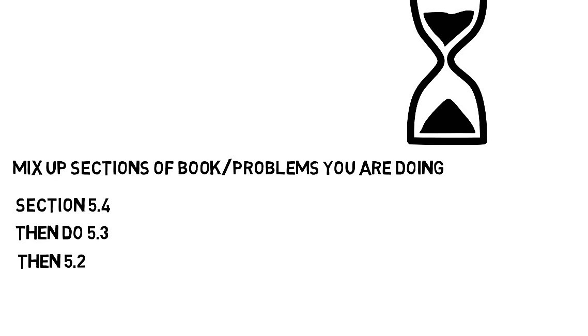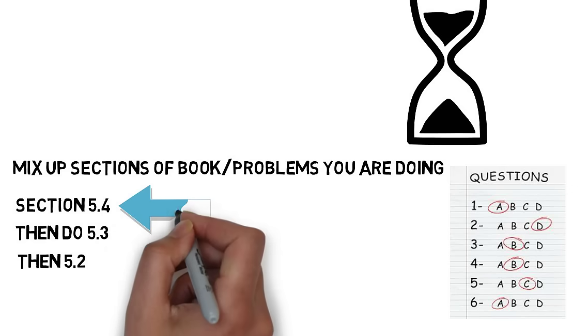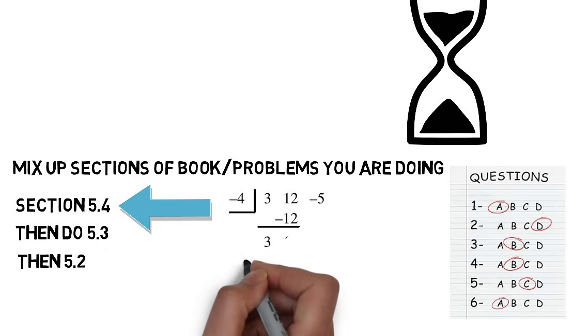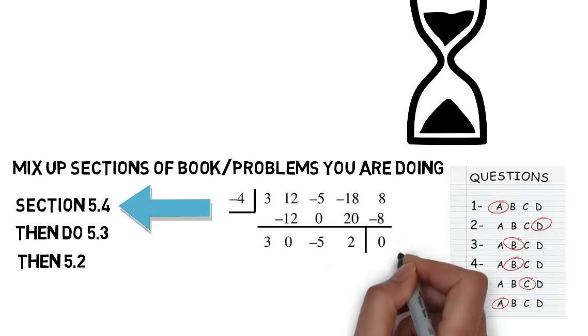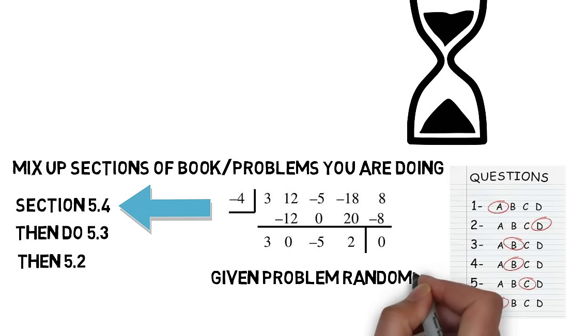Now, why do you do this? Because you want to make sure that you could do all these problems on a test if you didn't know what section things were on. If section 5.4 is all about synthetic division, even if you get an abstract problem, you still can assume it requires synthetic division. But just given that problem randomly on a test, would you know to do that? This is something to ask yourself and a reason to kind of mix up the sections you work on so that you can fit the pieces together.